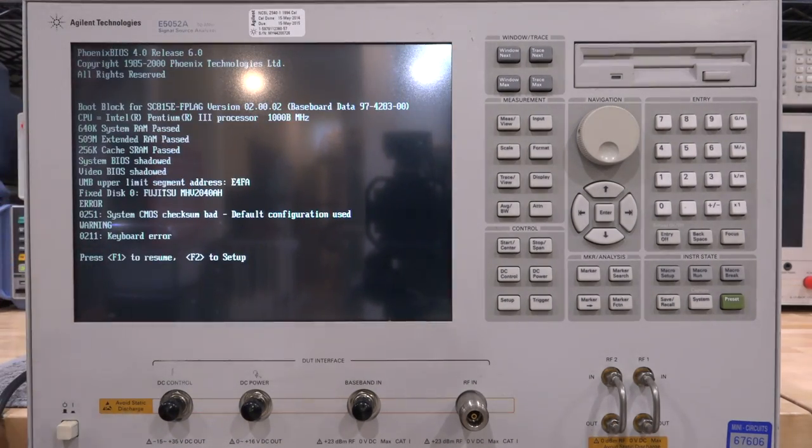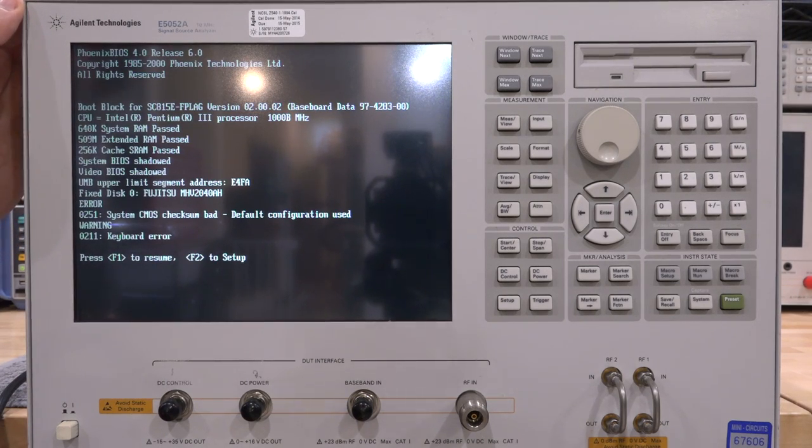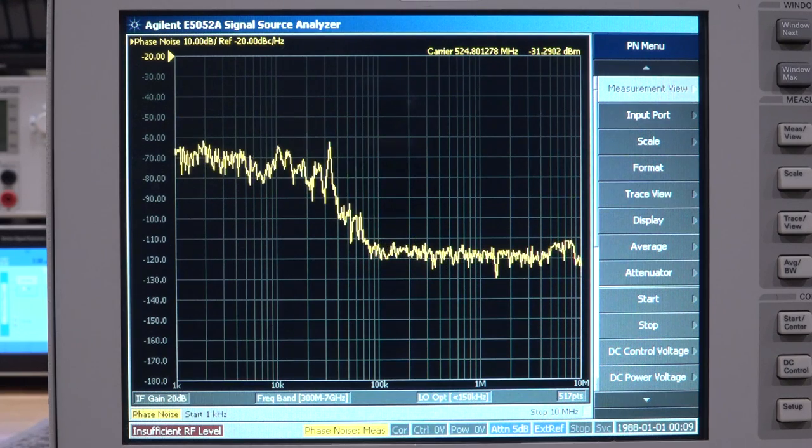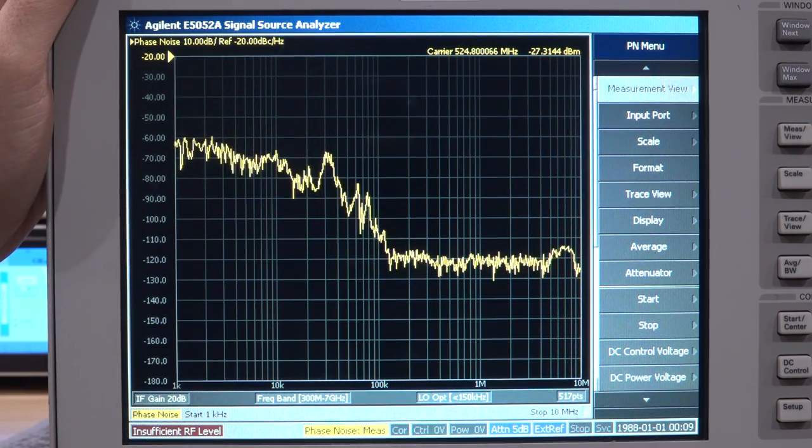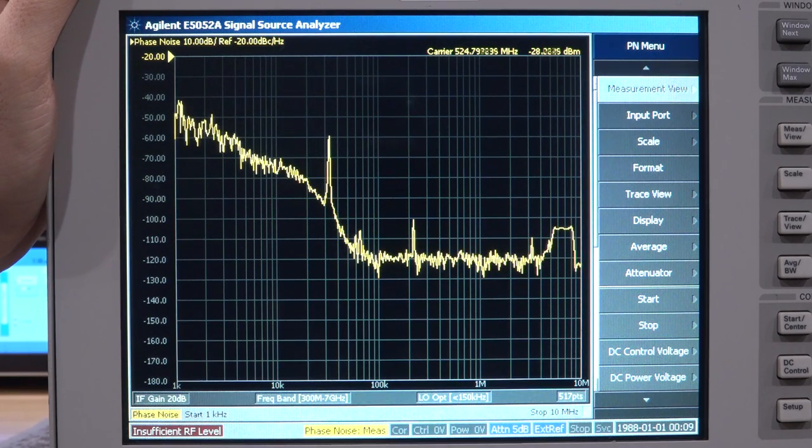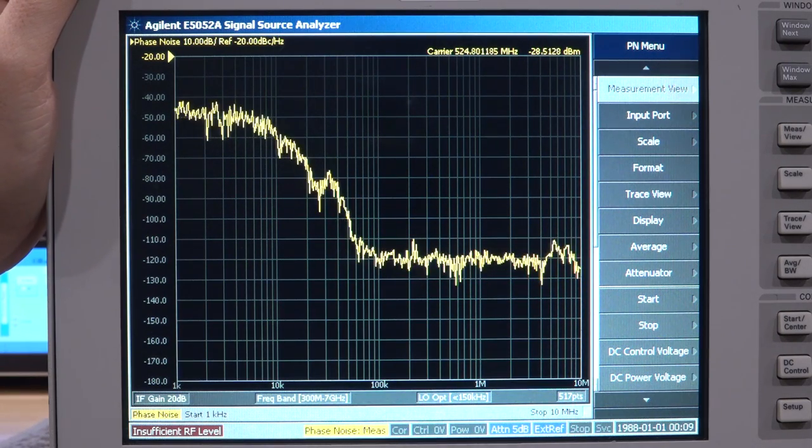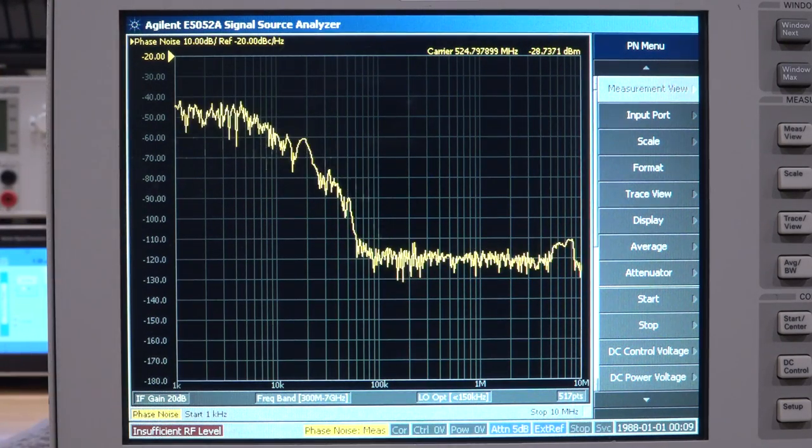First thing first, it's complained that the CMOS battery is dead. Not surprising, these motherboards are quite old. We can fix that later. And by the way, the screen looks really reflective, but it's actually not. It does have a matte finish. So let's do some basic measurements. Right now we're in phase noise measurement mode, and we're measuring gibberish because there's nothing connected. The input has no power going into it, and it says insufficient RF level, which is correct.